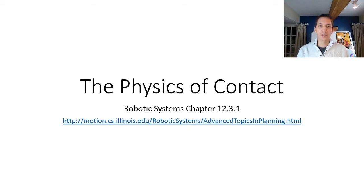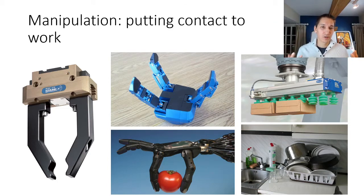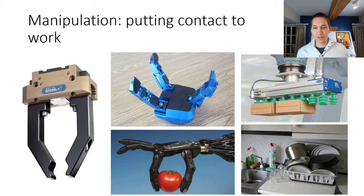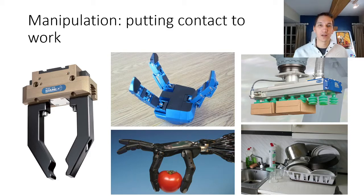Hi folks, today we'll be talking about the physics of contact and it's the subject of robotic systems chapter 12.3.1. In manipulation we're really tasked with trying to put contact to work. We need to reason about how things touch each other, how our hands touch things, how those things touch other things. It's really important for us to understand what contact actually means and how the physics of contact leads us to generate interesting AI algorithms.